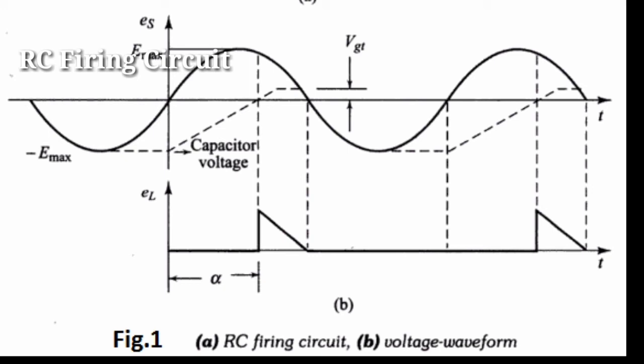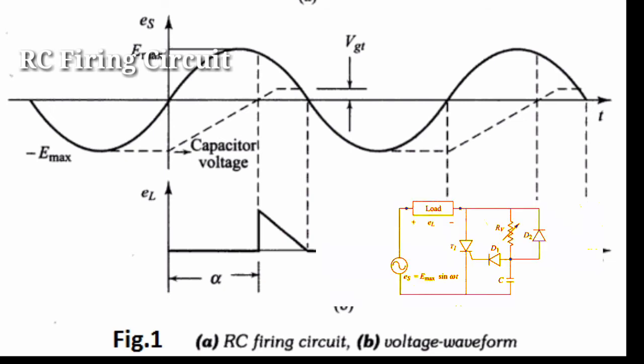Capacitor C begins to charge through RB from the initial voltage minus Emax. When the capacitor charges to positive voltage equal to gate trigger voltage VGT equal to VG minimum plus VD1, SCR is triggered.